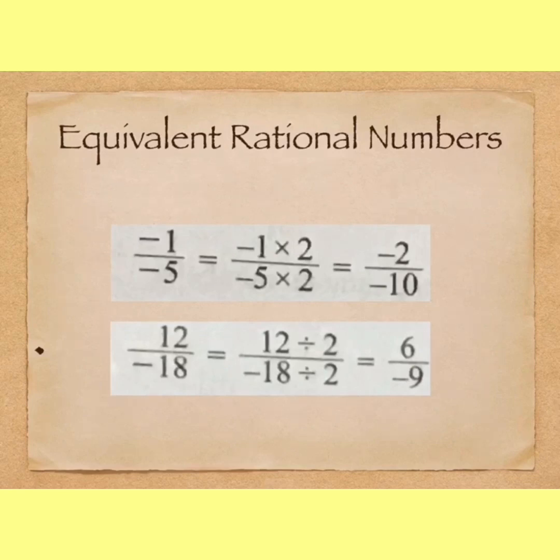Then 12 upon -18 and 6 by -9 are equivalent. In the same way, -1 upon -5 and -2 upon -10, these both rational numbers are equivalent.